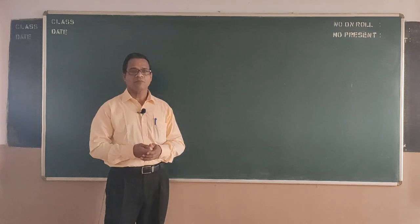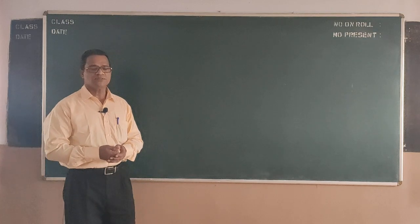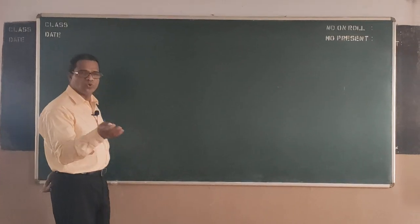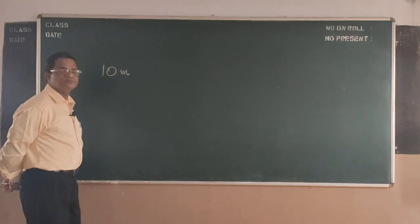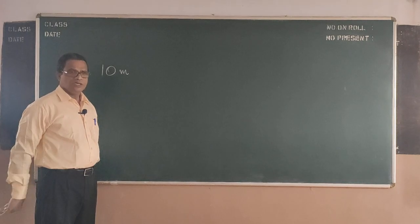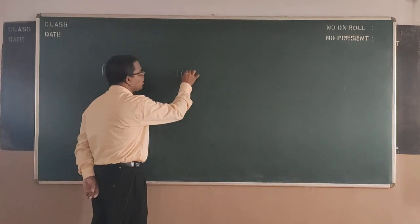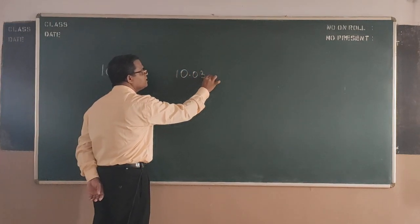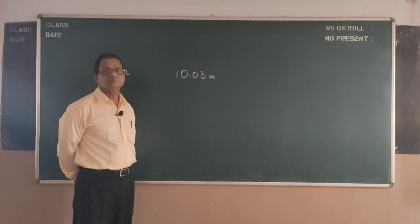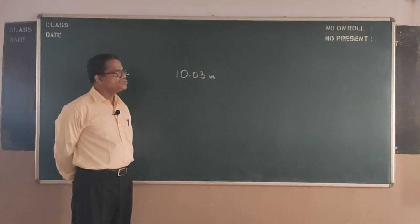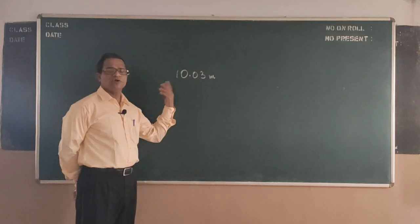For example, suppose I take a meter scale and measure the length of the room. The actual length of the room, suppose it is 10 meters. I use a meter scale and I get 10.03 meters, a little more than what we expect.